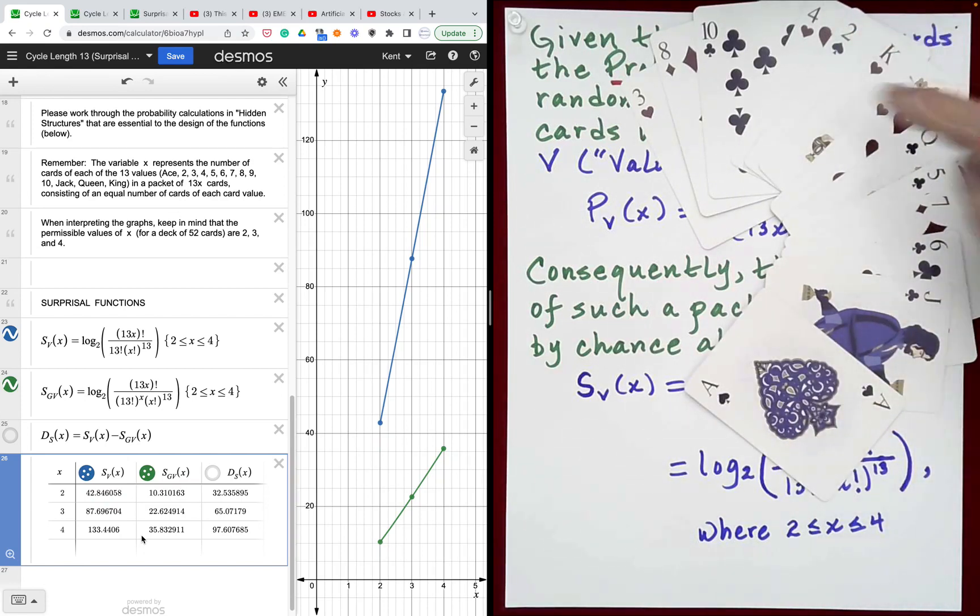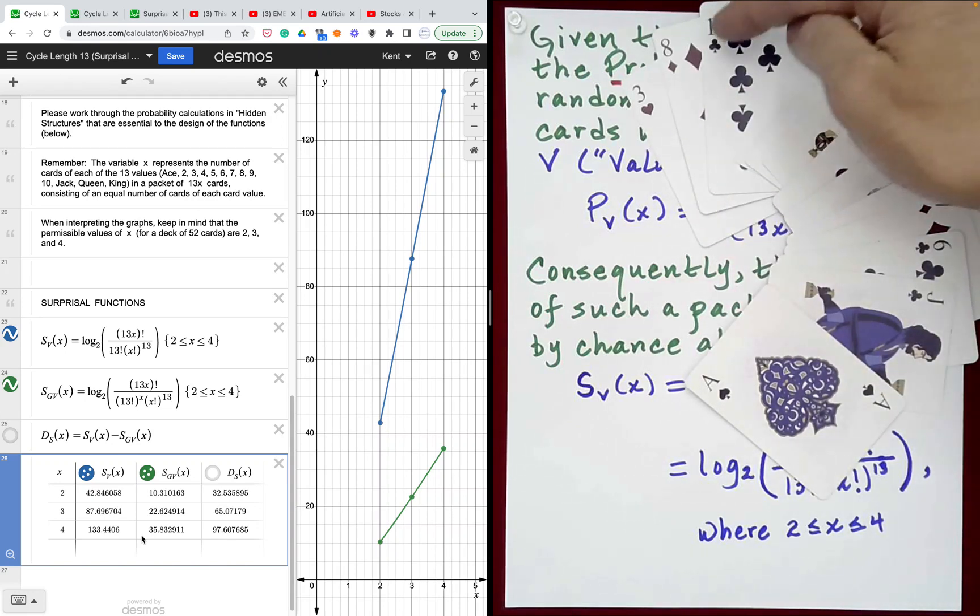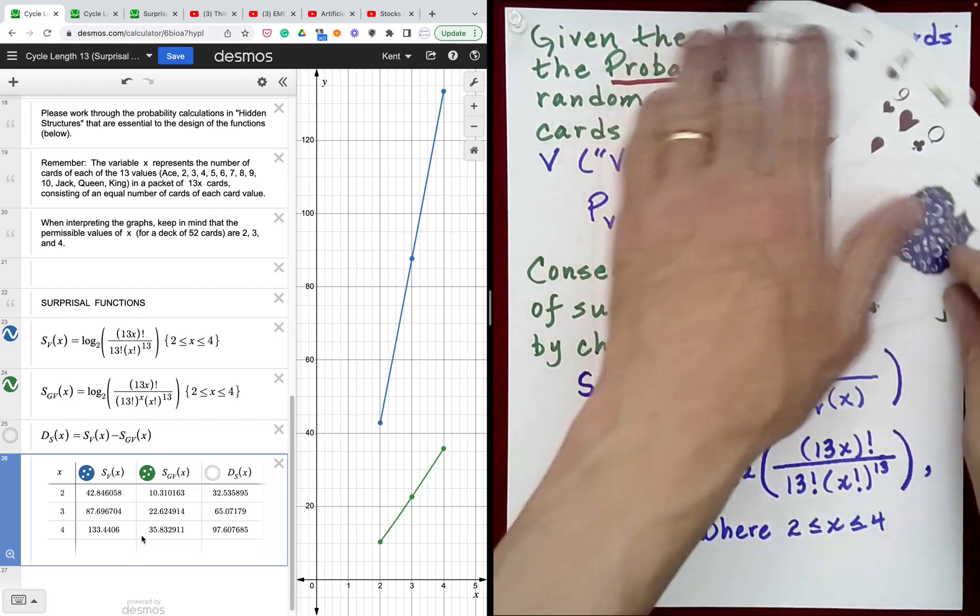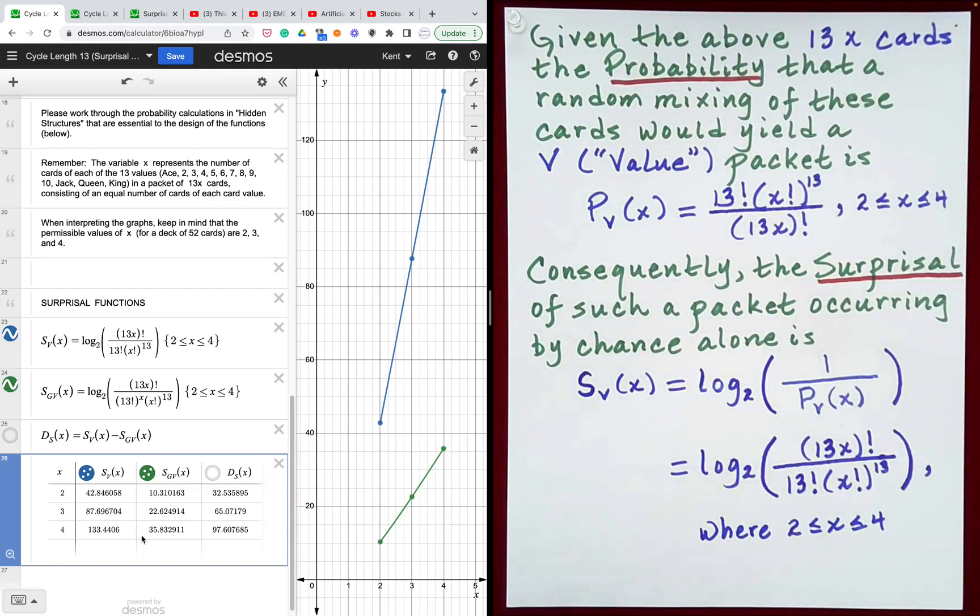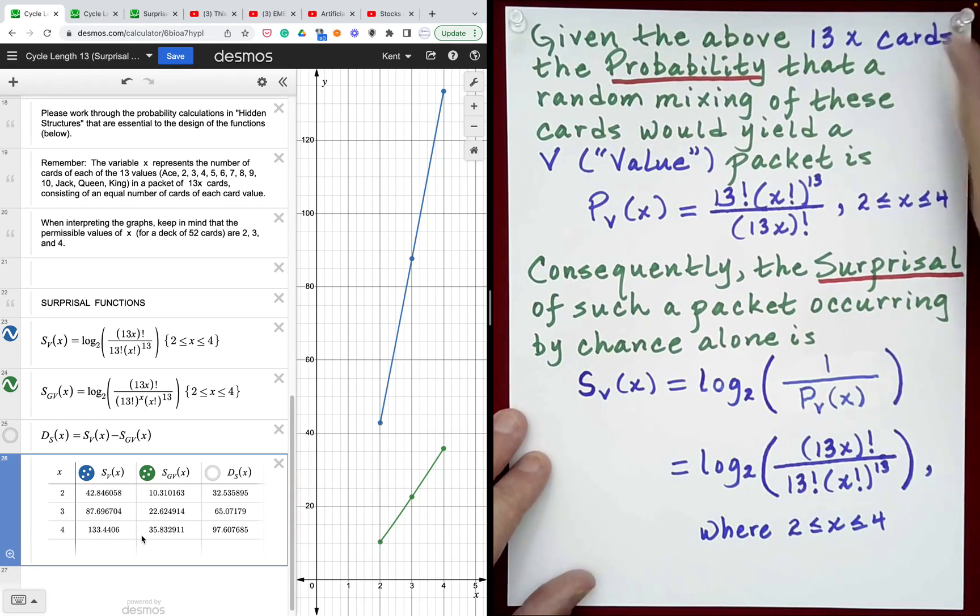Ace, 2, 3, 4, 5, 6, 7, 8, 9, 10, Jack, Queen, King. Every set of 13 cards beginning at the top of the deck consisted of exactly one of each of the 13 card values. The surprisal associated with doing that is the same level of surprise as we saw over here. It's 35 bits.